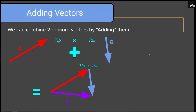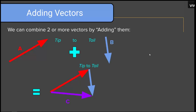We can combine two or more vectors by adding them — we add vectors tip to tail. If we wanted to add vector A to vector B, we would get vector C: red plus blue equals purple. We lay out the red A vector, then the B vector starts at the tip-tail intersection. The red arrow meets the blue arrow at the tip of the red and the tail of the blue. The purple arrow C goes from the tail of A to the tip of B.